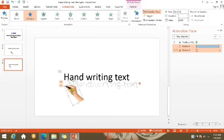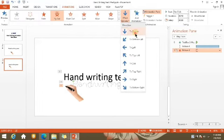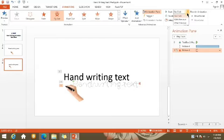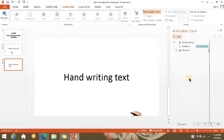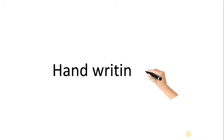Click natin yung image and then dito sa Animation tab, click natin yung Add Animation, tapos piliin natin yung Exit animation. Piliin natin itong Fly Out. Nasa inyo kung gusto ninyo yung direction niya — pababa, pakanan, pakaliwa. Click ninyo yung picture, then i-click ninyo itong Effect Options. Gusto natin yung pag-exit niya ay mangyayari pagkatapos ng animation — after preview. Play natin. Okay na.